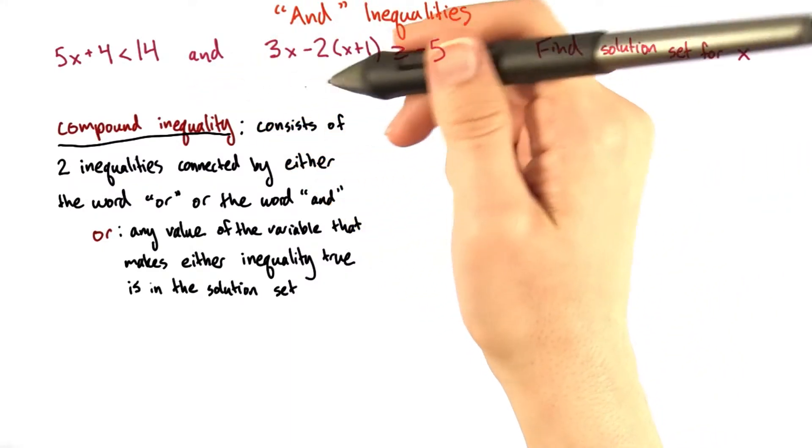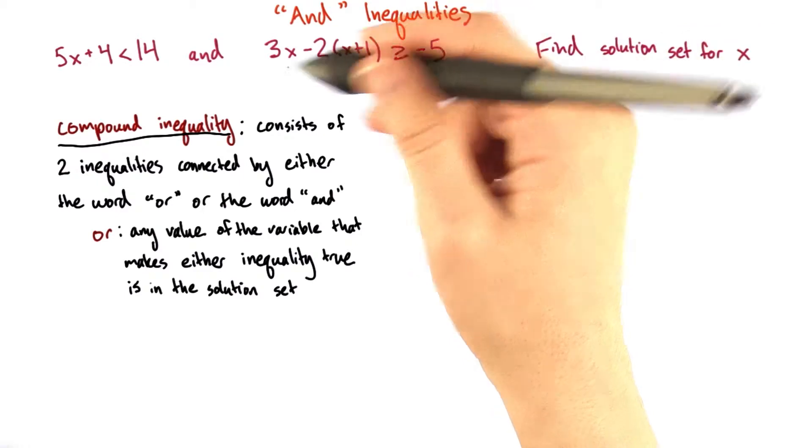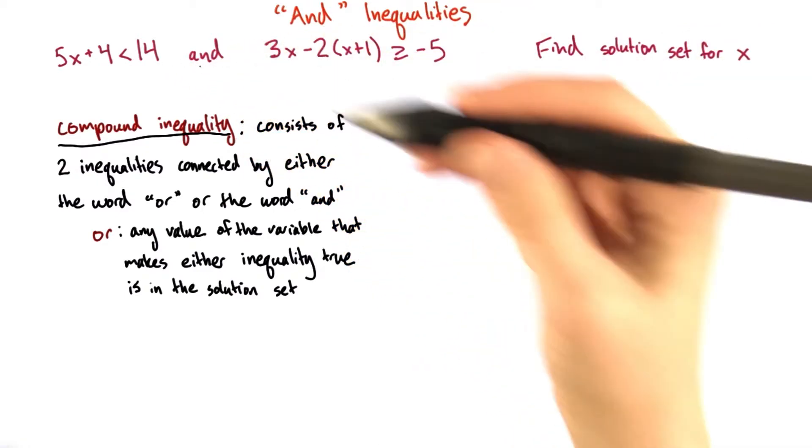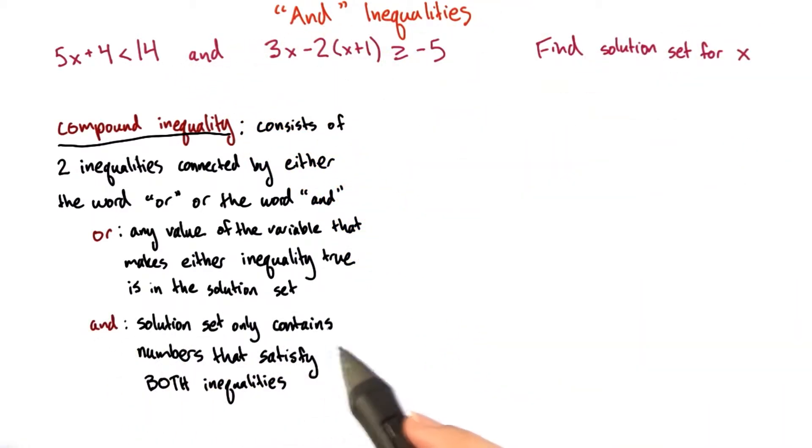This is another compound inequality. This time the inequalities are joined by and. When a compound inequality has an and, that means the solution set only contains numbers that satisfy both inequalities.